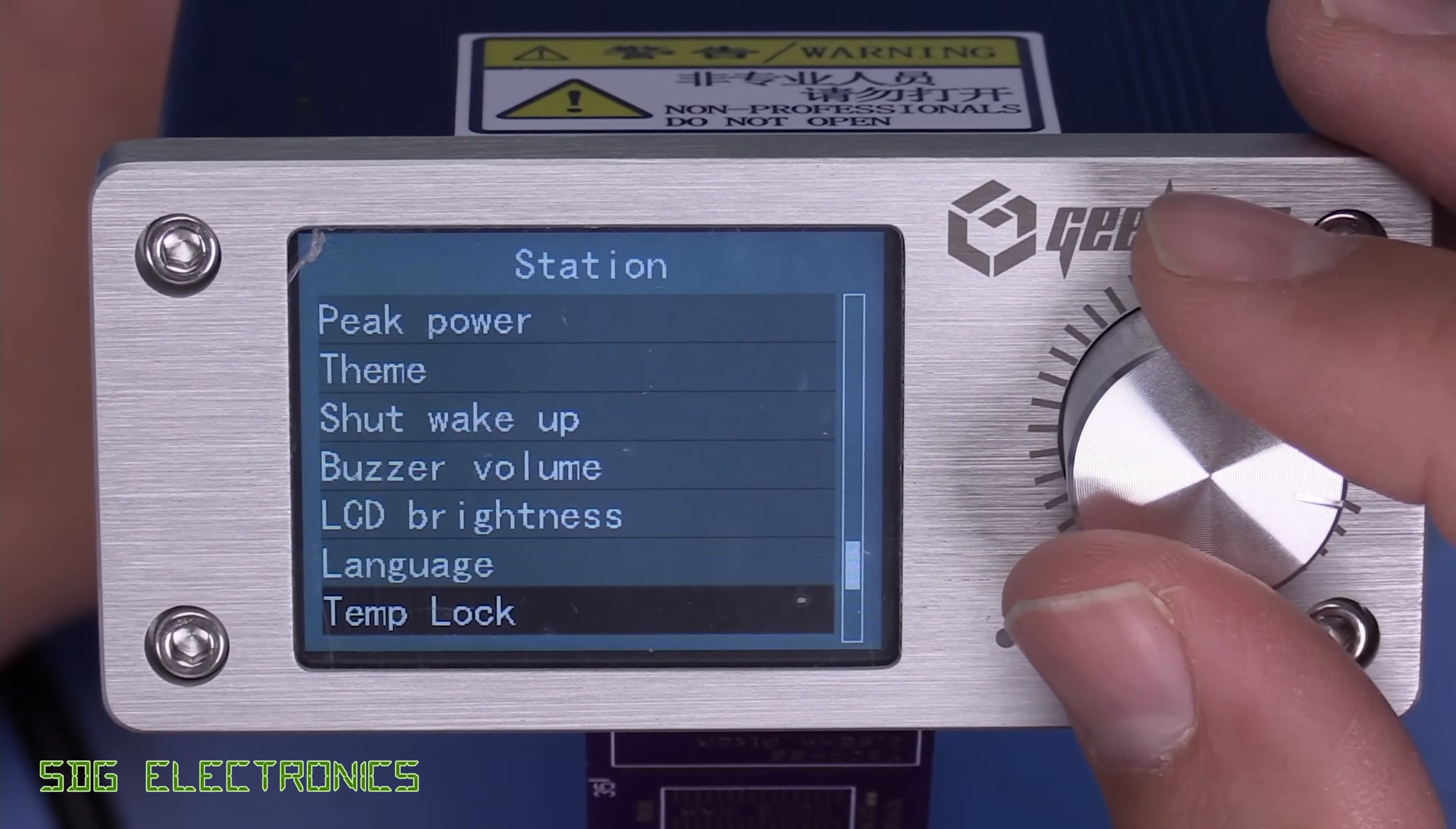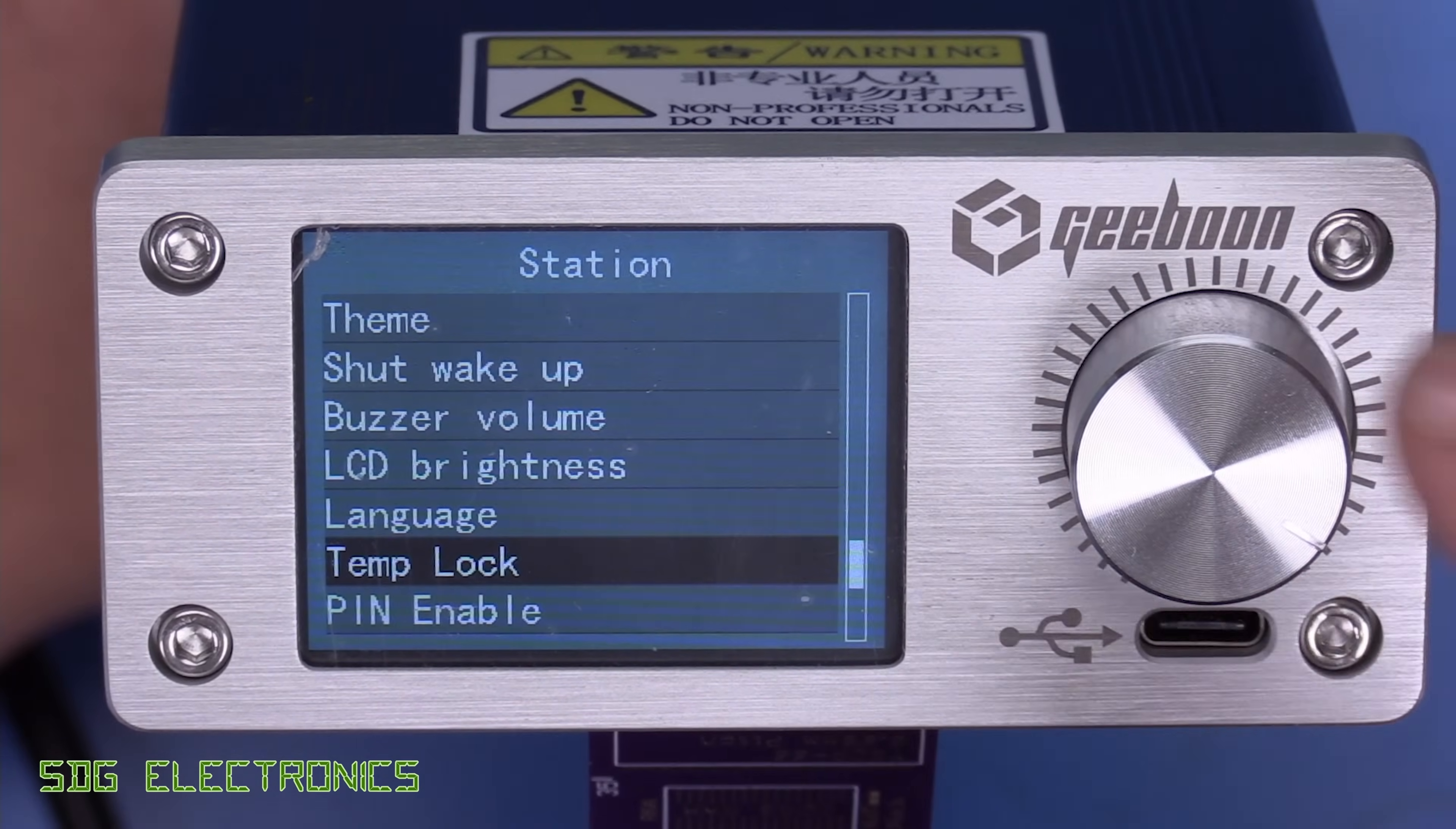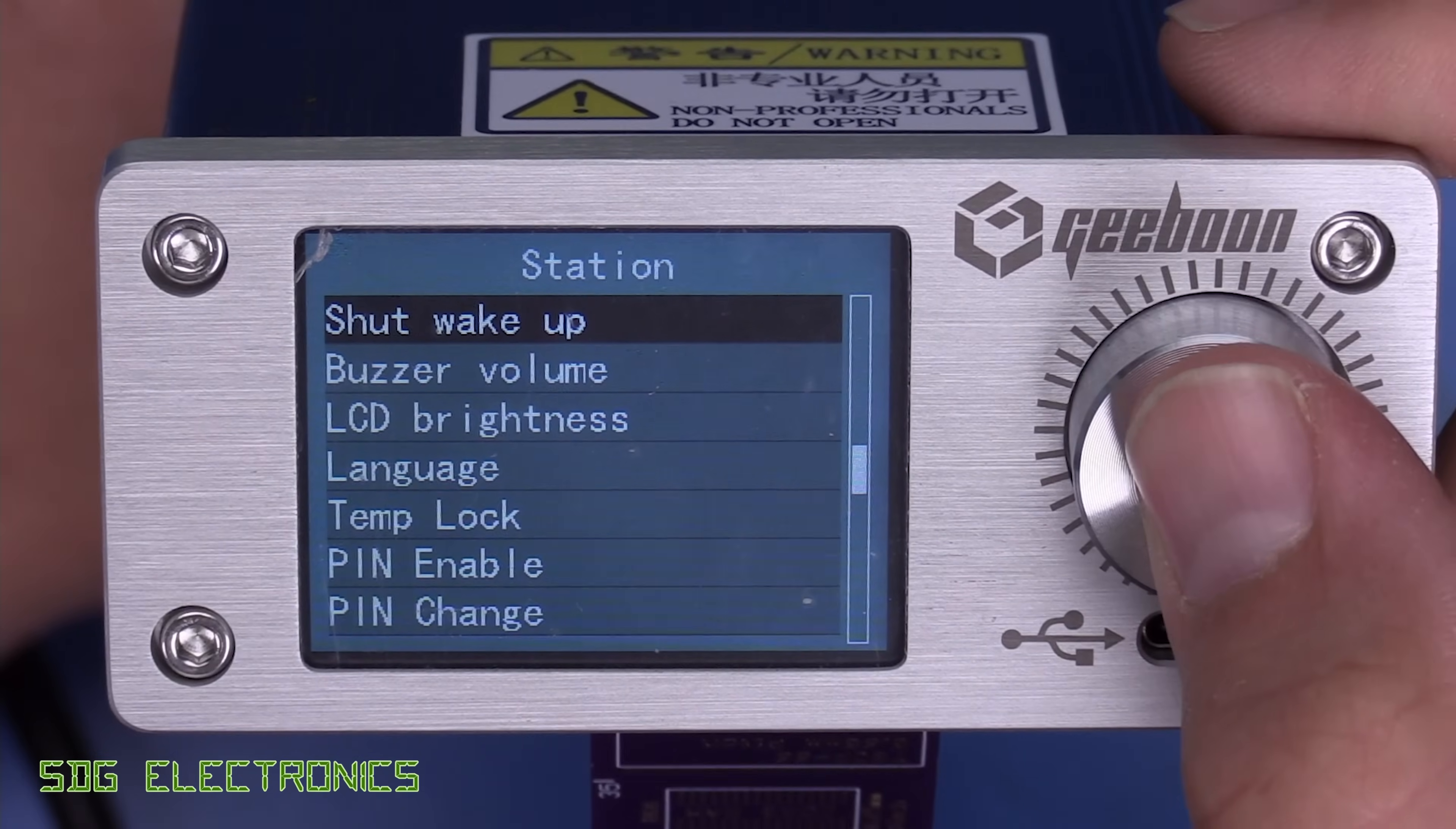We've got LCD brightness, language. So just English and simplified Chinese. Temperature lock so that you can prevent people adjusting the temperature. And then just a pin, which allows you to lock the unit so that people can't change any of the settings.